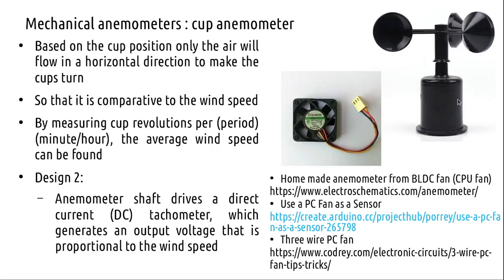There are two options: average wind speed can be found from this technique, or it drives a DC tachometer which generates an output voltage proportional to wind speed. An interesting approach is building a homemade anemometer from a BLDC CPU fan — it is an Arduino-based project. Most of these fans have four wires, and some have a third wire as a tachometer output. There is a Hall effect sensor inside the chamber for measurement.